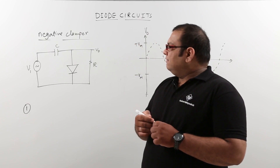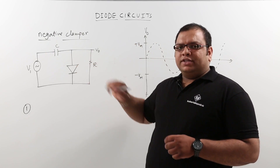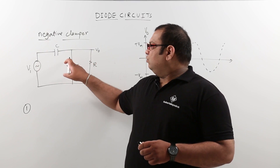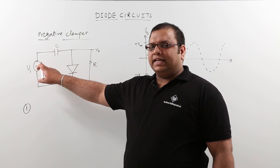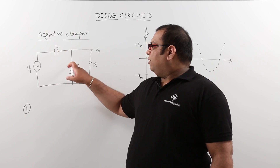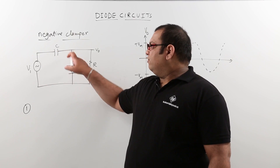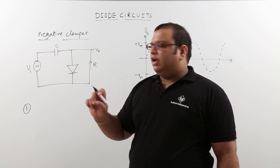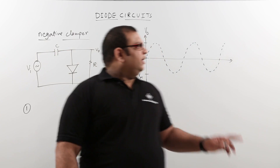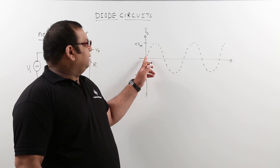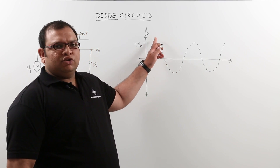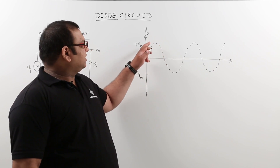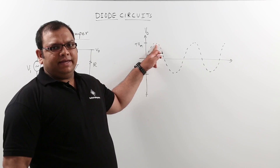The capacitor will charge when the diode conducts. According to the polarity, the positive terminal is connected to the signal source. So when you get a positive peak, the diode will conduct. During the positive half cycle, the diode conducts and the capacitor charges to its maximum value of plus Vm.